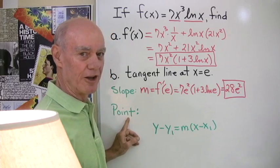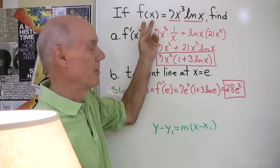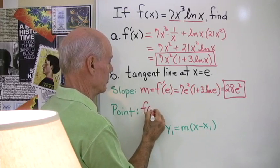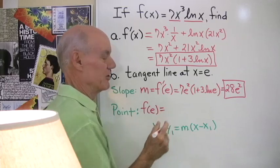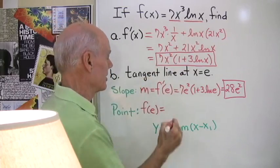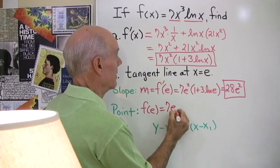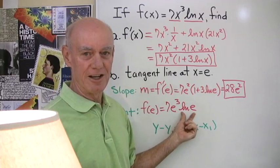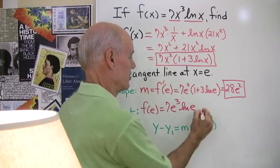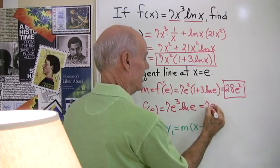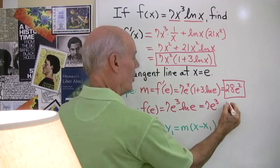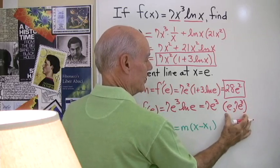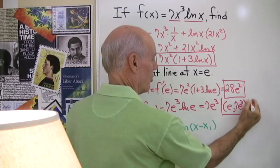So the next thing I need is a point on the line. To find a point on the line I'll go back to my original function and find the y value when x is equal to e. So I find just f(e). I'll substitute e for x here. 7e³ln(e). And again I have that identity. Natural log e is just 1. So 1 times this is just 7e³. So that means that the point (e, 7e³) is on this line. So there I have a point on the line.